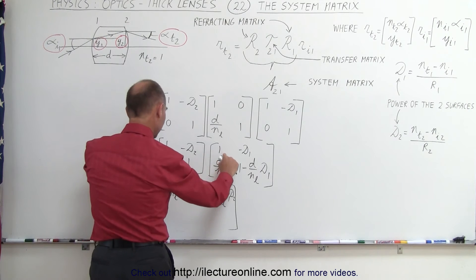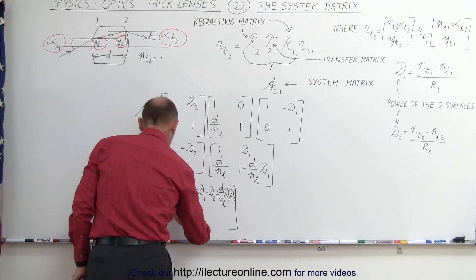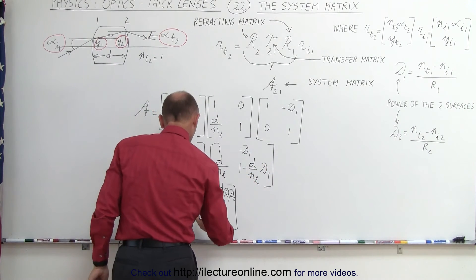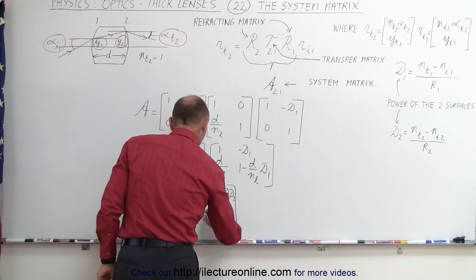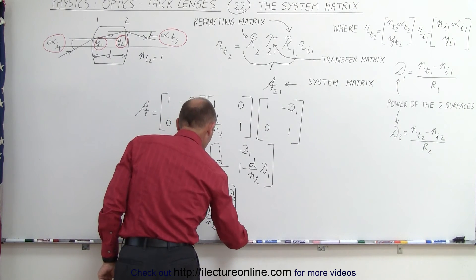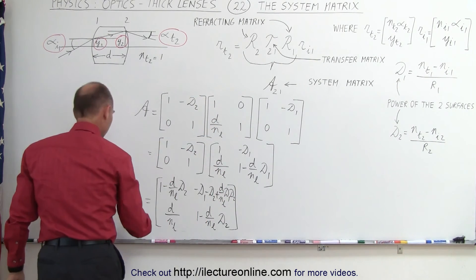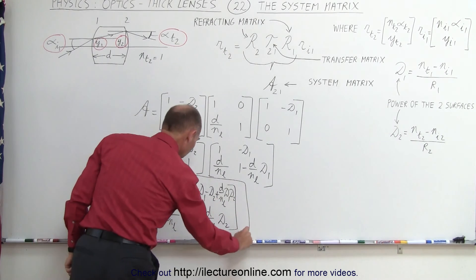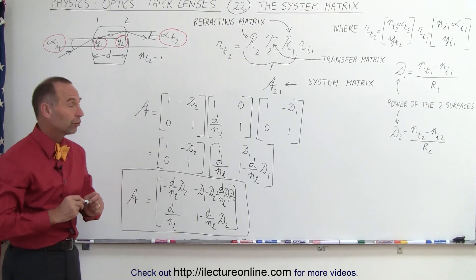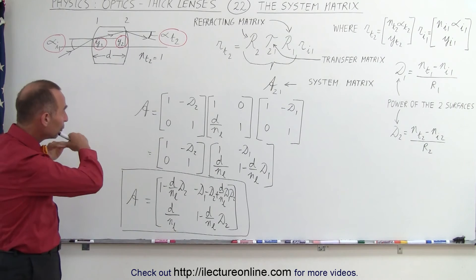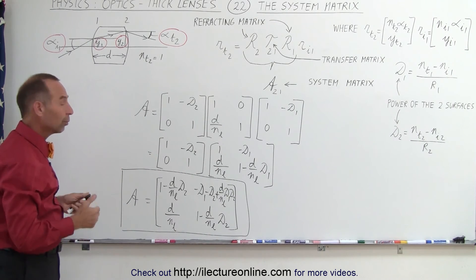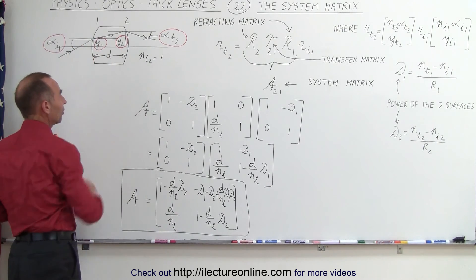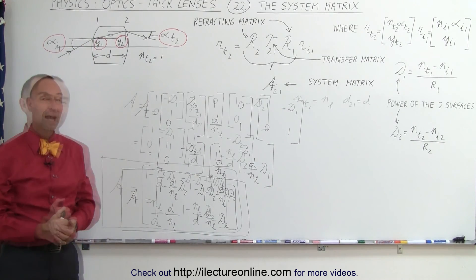And then, for the bottom row, we have this is 0 plus this. So, we get D divided by N sub L. And then, we have this times this. This gives us 1 minus D over N sub L times D2. And this is what we call the system matrix, which defines what happens to the ray as it travels through both boundaries on both sides of the lens and through the middle of the lens. And this will tell you what happens to the ray as it exits the second boundary, given the information as it enters the first boundary. And that's how we do that.